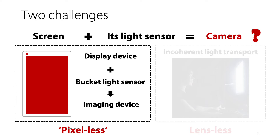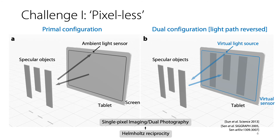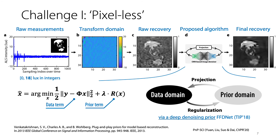We face two major challenges. First, there is only one pixel for the ambient light sensor. By combining the display as the active source of illumination for spatial modulation, this setting turns out to resolve spatial information by displaying a video sequence on the screen. This image modality is known as dual photography or single pixel imaging. As shown on the right, the light paths can be reversed. As a result, the display screen works as a virtual sensor with each pixel as a sensor pixel and the ambient light sensor as a virtual light source.